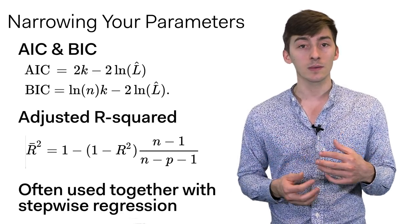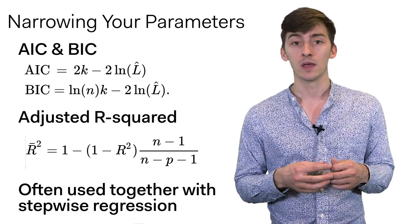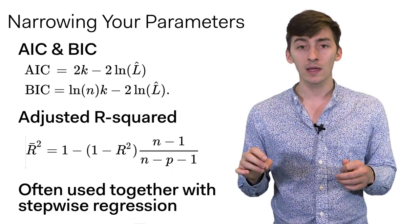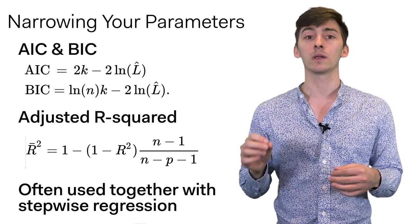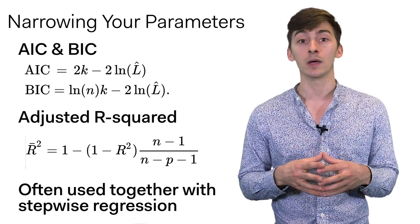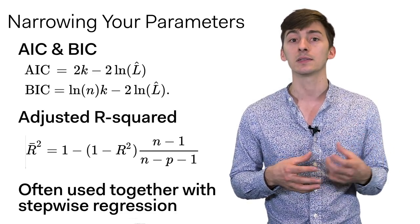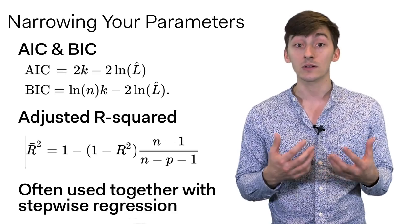These are often used together with some sort of stepwise regression, where we add and take away different parameters one by one until we eventually converge on some model that has a lowest AIC or BIC or a high adjusted R-squared.